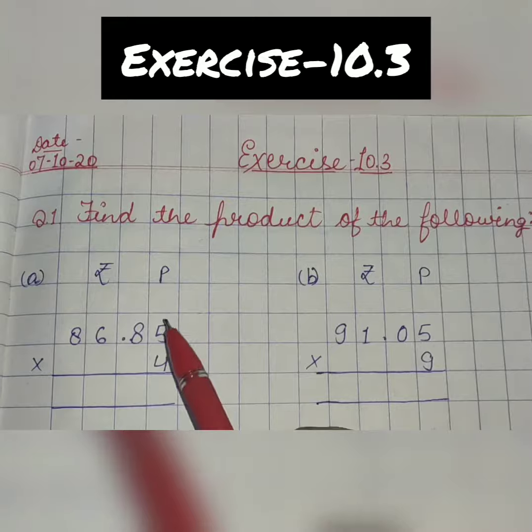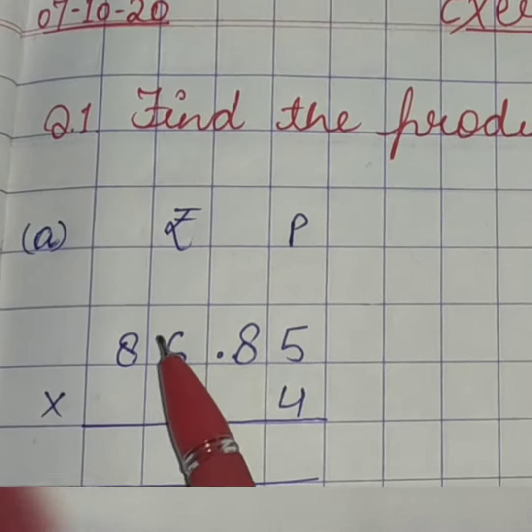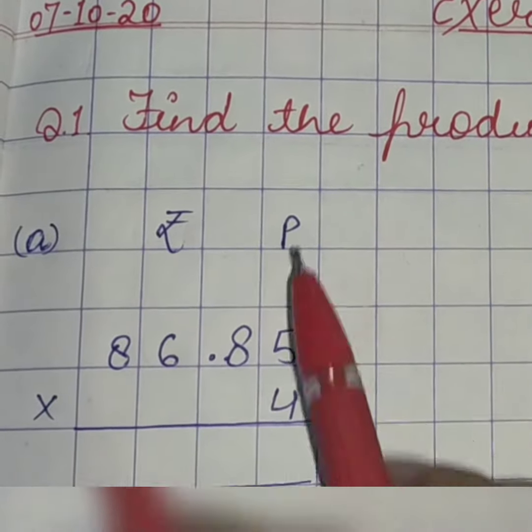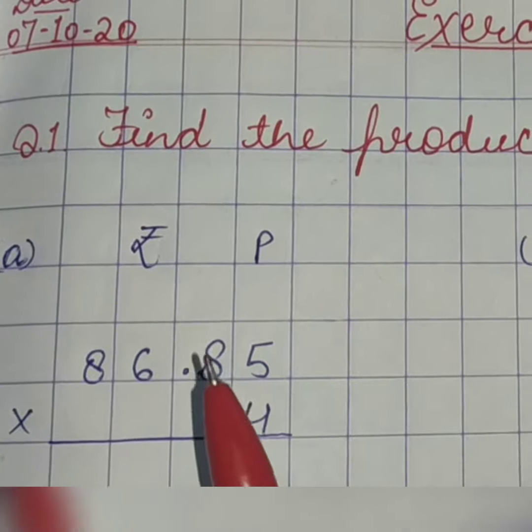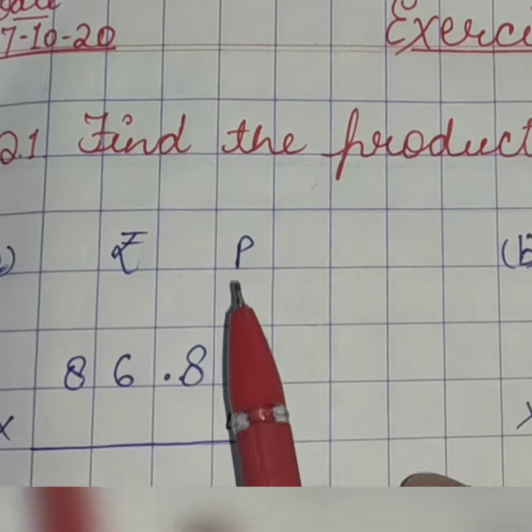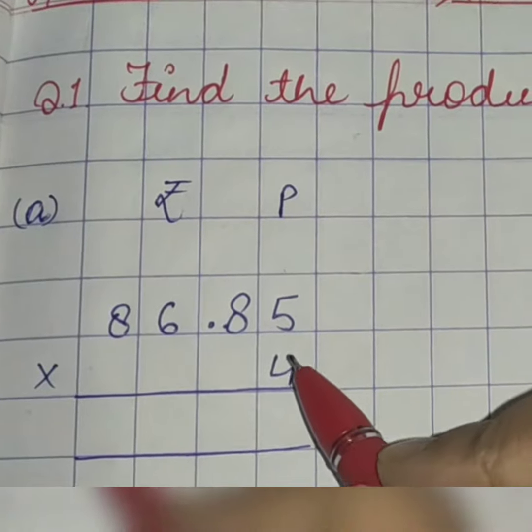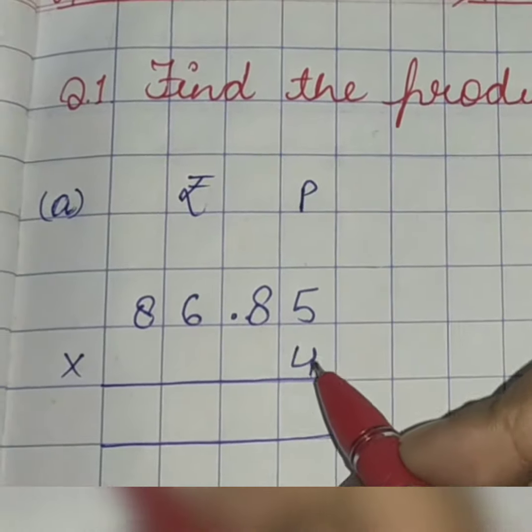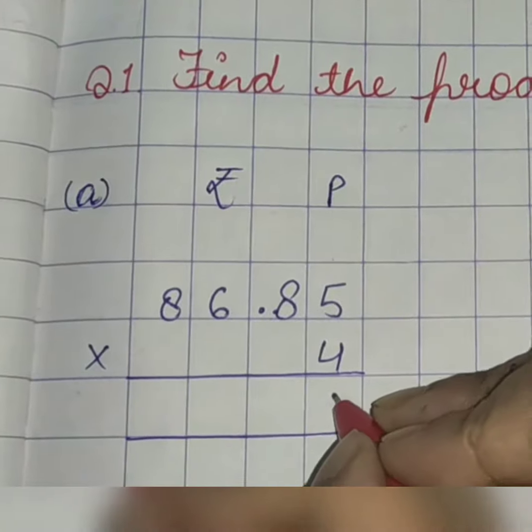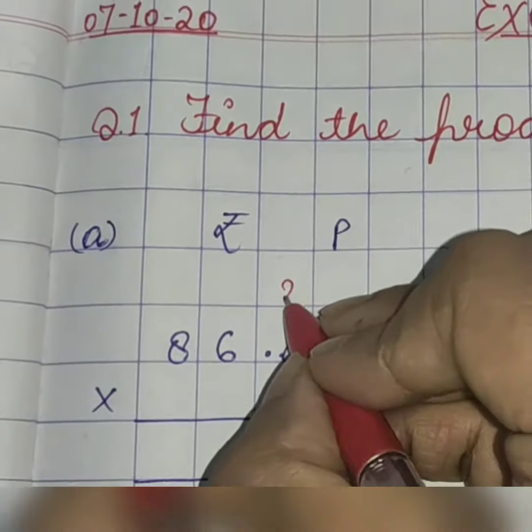Come to A1. We have to multiply 86 rupees 85 paise by 4. Remember this rupees and paise are given, we have to do it accordingly. So, we will start with the right hand side. 4, 5's are 20. 0 here, 2 as a carryover.